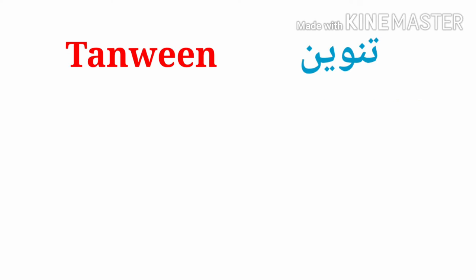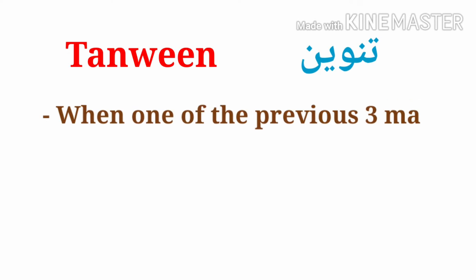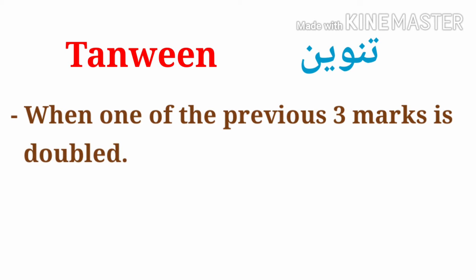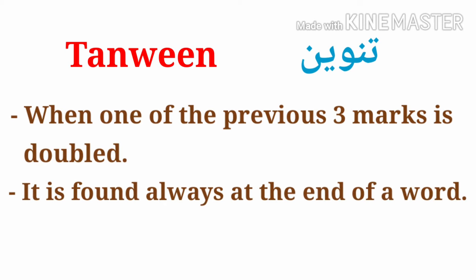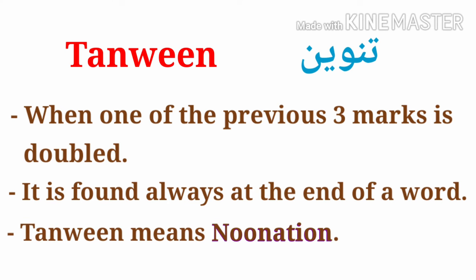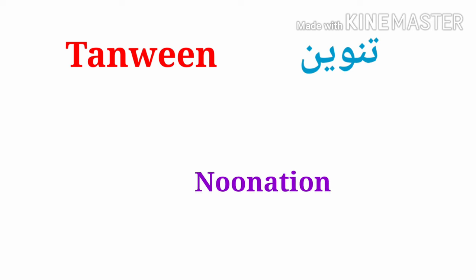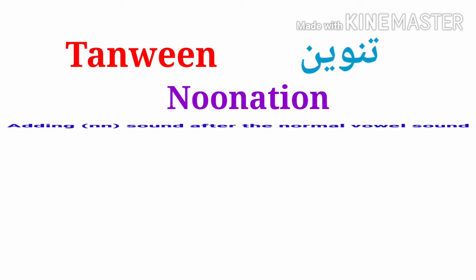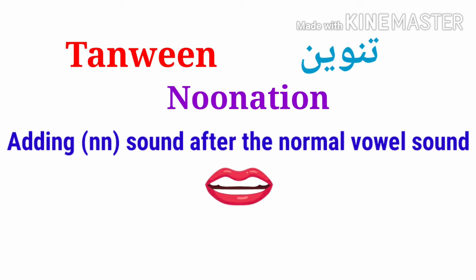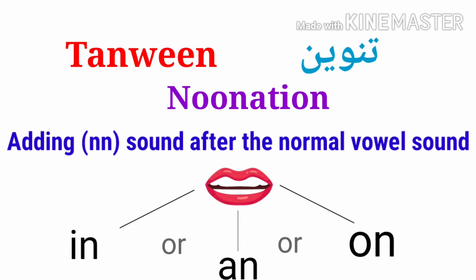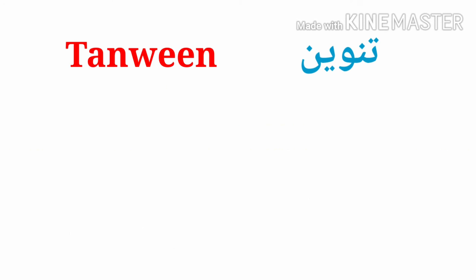This is the tanween. Tanween is when one of the previous three types is doubled, and it appears only at the end of a word. When we translate tanween to English it means 'nunation,' which simply means adding the sound 'nn' after the normal haraka. So when you find it, it becomes: 'in,' 'an,' 'un.'